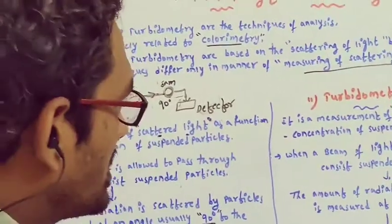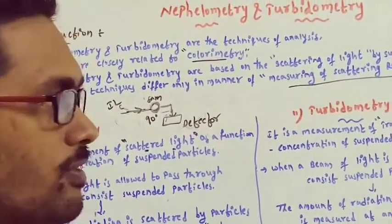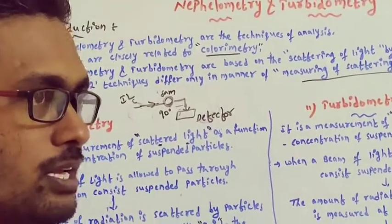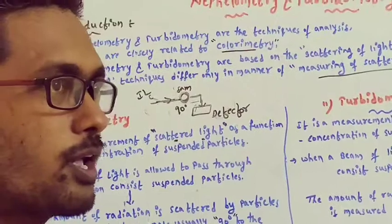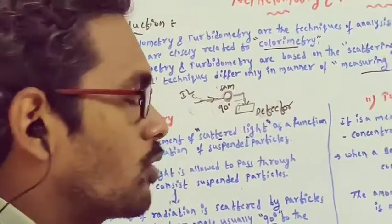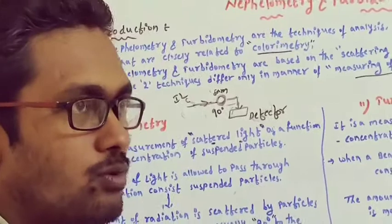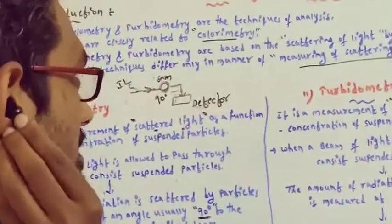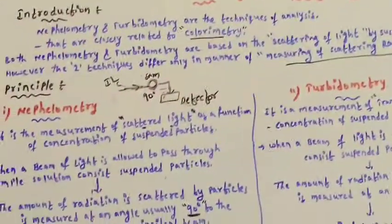One question was asked in the GPAC exam about this. Nephelometry and turbidimetry are related to which of the following methods — chromatography, spectroscopy, calorimetry, or electro-analytical methods? The answer is calorimetry. Both nephelometry and turbidimetry are closely related to the calorimetry method.